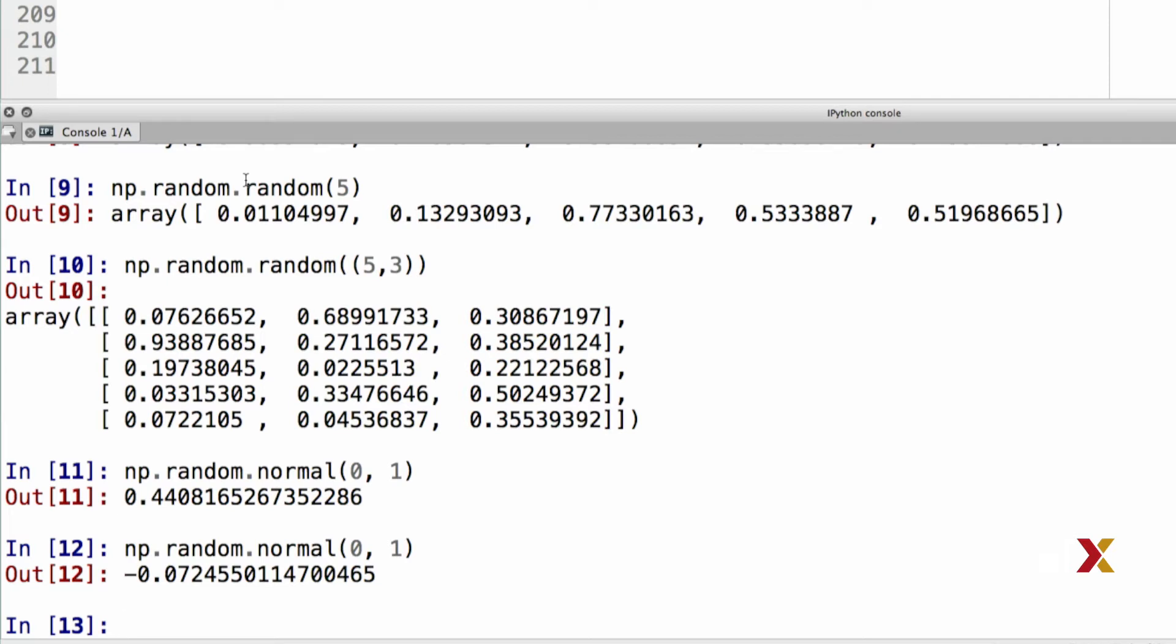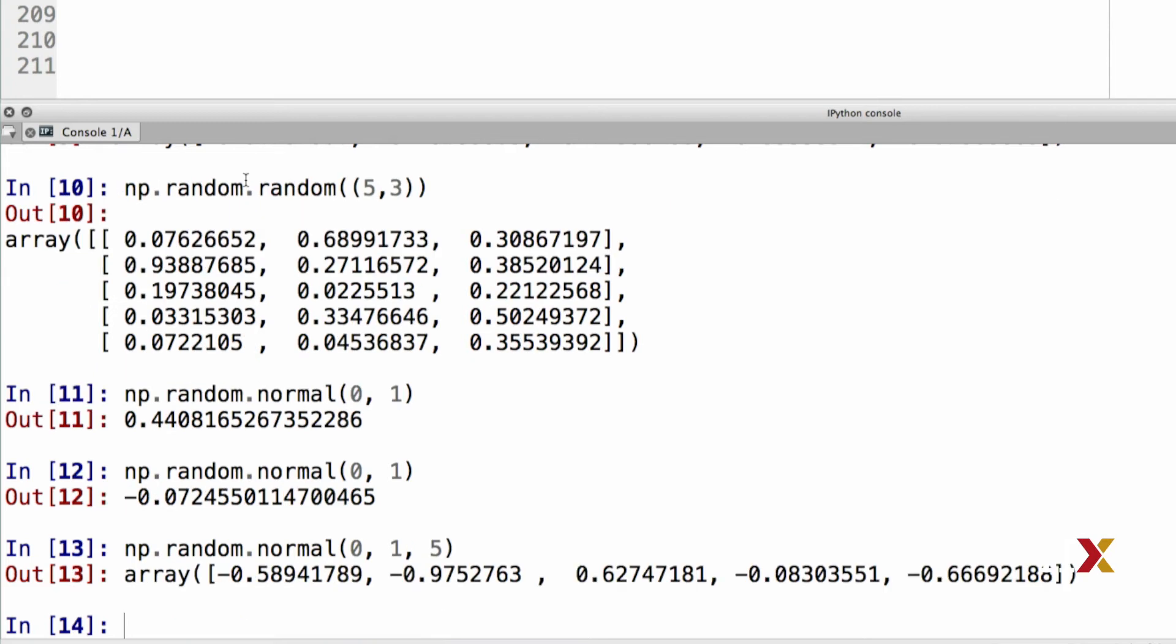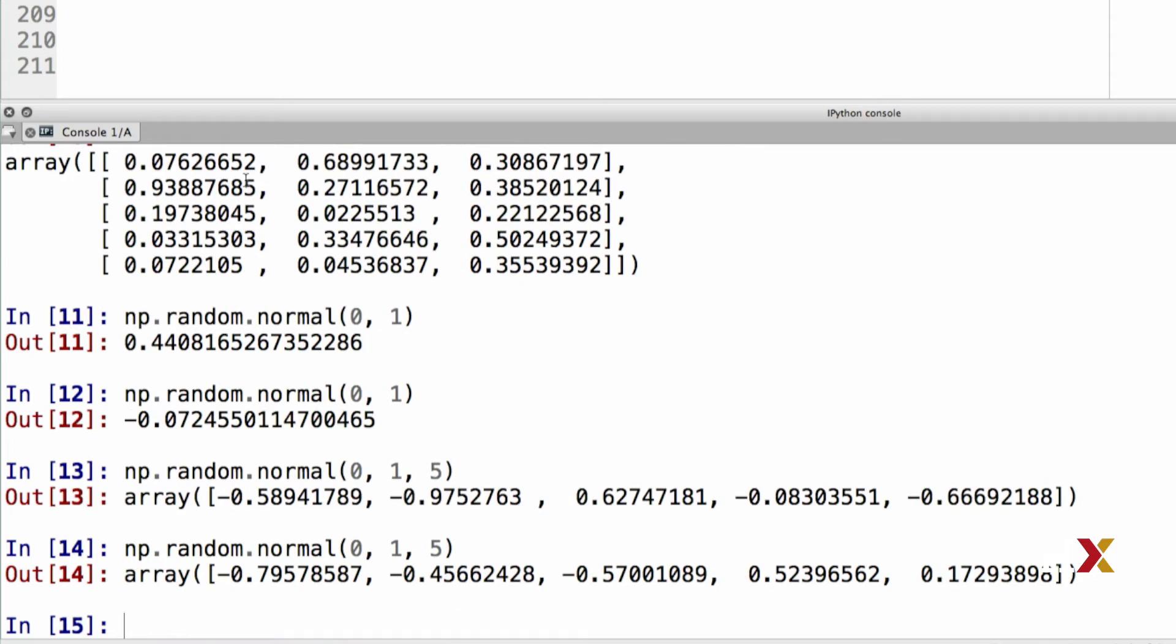If we'd like to generate instead a 1D array of numbers from the same distribution, we can specify the length of the 1D array as the third argument. In this case, if I would like to generate an array of five numbers, I will simply add a third argument, which is number 5 in this case.